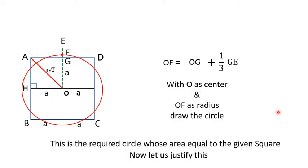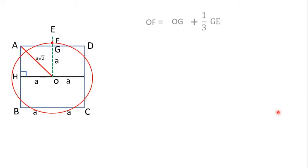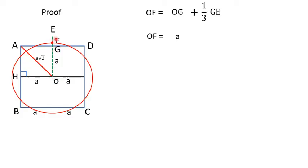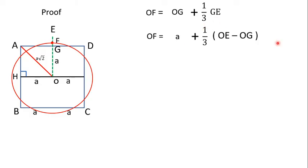Let us now justify this construction. We know that OF equals OG plus one-third of GE. OG is A units, so OF equals A plus one-third of GE. We can write GE as OE minus OG. Therefore, the radius OF equals A plus one-third of OE minus OG.